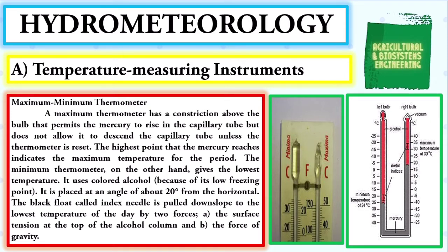Next, the minimum-maximum thermometer. A maximum thermometer has a constriction above the bulb that permits the mercury to rise in the capillary tube but does not allow it to descend unless the thermometer is reset. The highest point that the mercury reaches indicates the maximum temperature for the period.